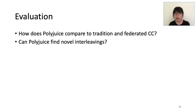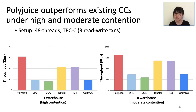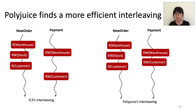In the evaluation, we focus on two questions: can Polyjuice achieve better performance than existing works, and can it find novel interleavings not covered by existing works? We use TPC-C as our benchmark. On the 48-thread, one-warehouse workload (high contention), Polyjuice achieves a 45% improvement. On moderate contention, the improvement is 19%. Manually checking the learned policy reveals that on high contention, Polyjuice finds a novel interleaving not covered by existing works that is crucial to the performance improvement.